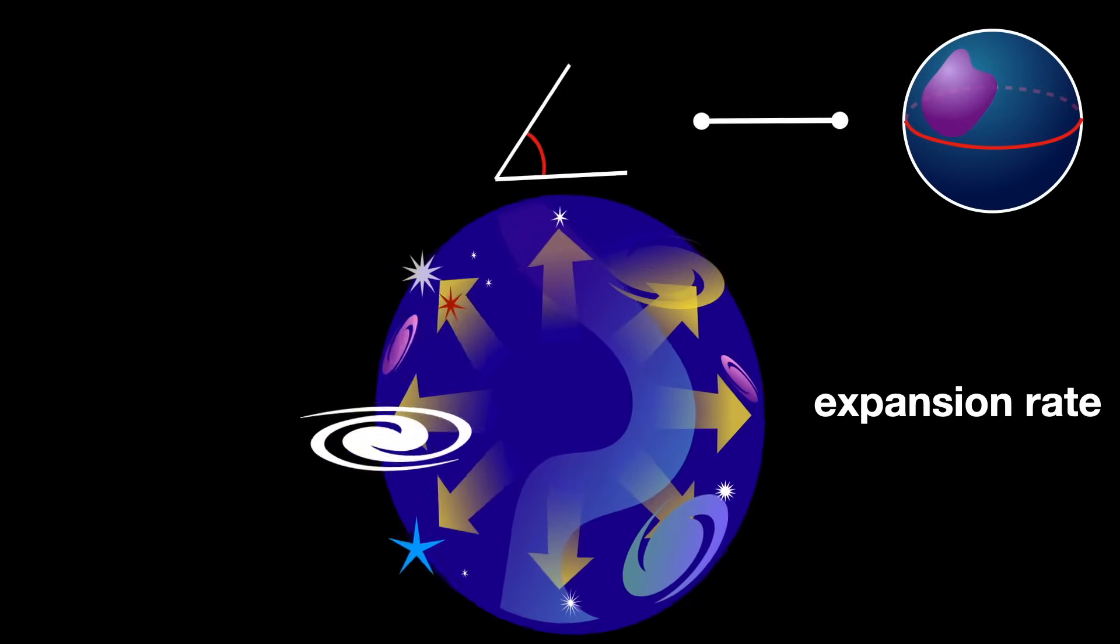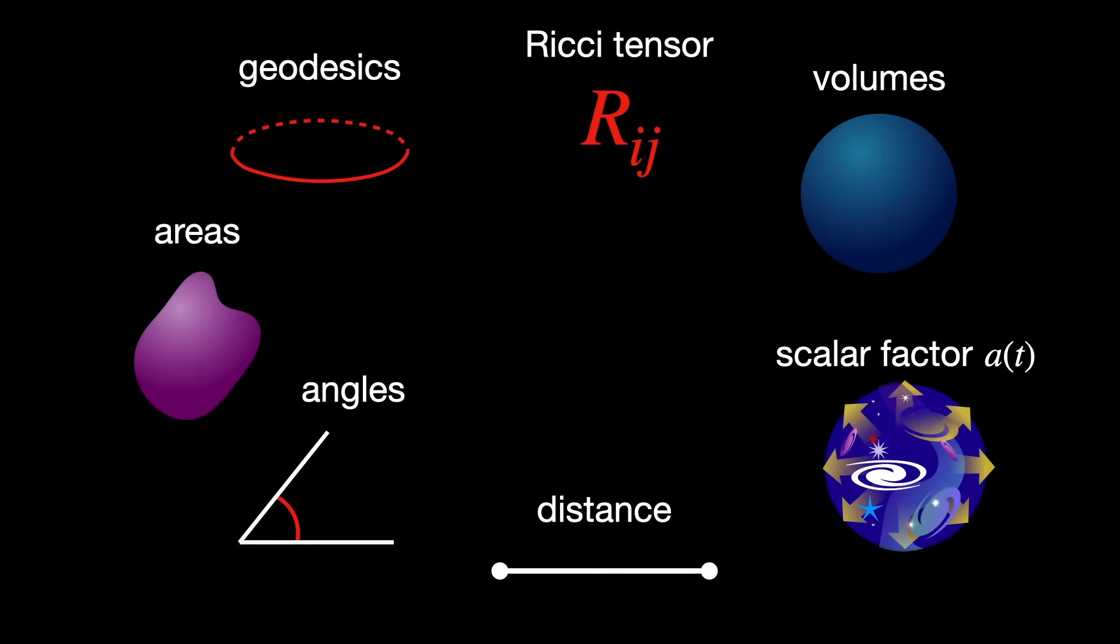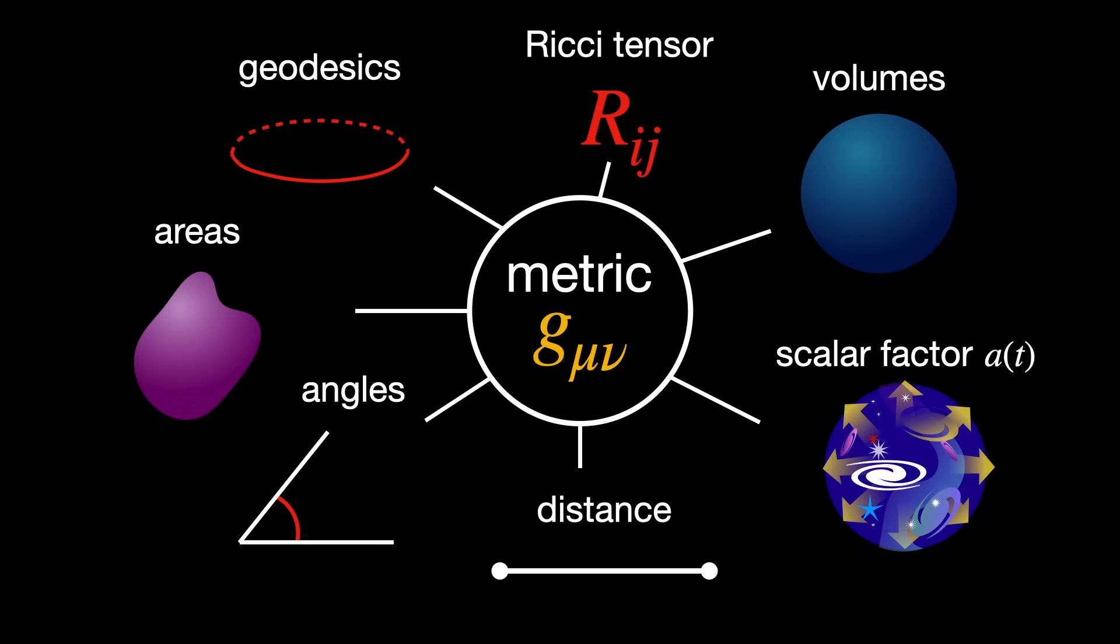One of the key requirements for a property to be intrinsic is that it must be derivable only from the metric g mu nu of the space. In other words, from the internal ruler that allows us to measure distances, angles, and curvatures without relying on how the space is embedded in any higher dimensional setting.